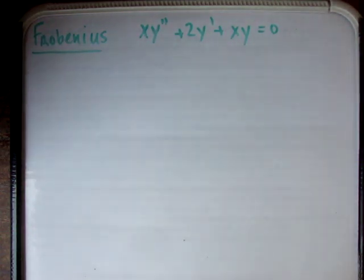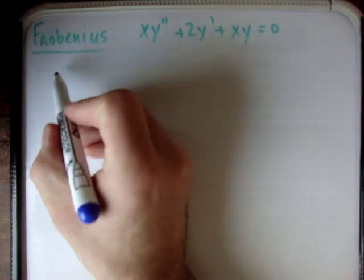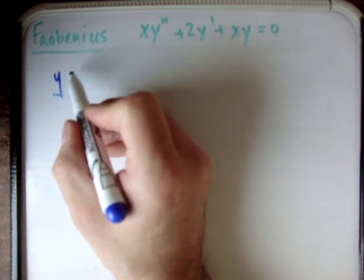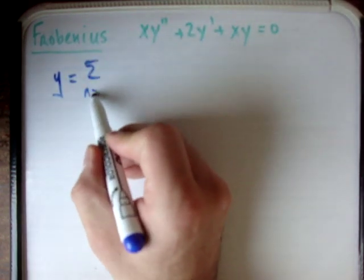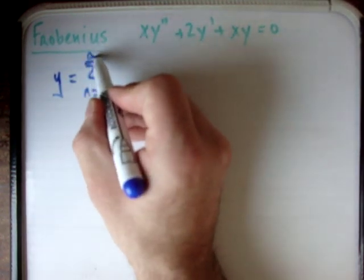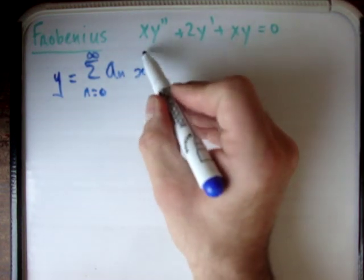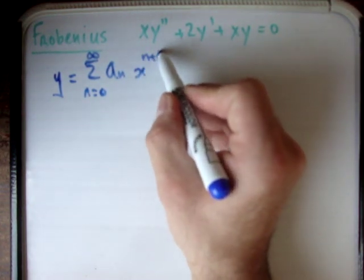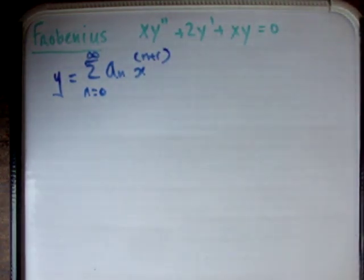The first thing we need to do is define our power series. Because we're using the method of Frobenius, I'm going to define y as the sum from n = 0 to infinity of a_n · x^(n+r). That is the power series required for the Frobenius method.